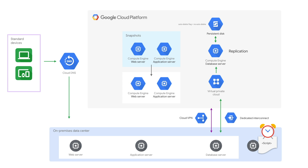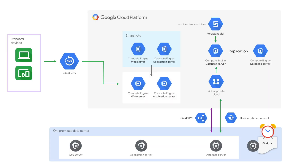Then configure Cloud DNS to point to the internet-facing web service on-premise. When a disaster hits, all MainStreetArt needs to do is to resize the database server instance to handle the production load. Use the web and application server snapshots to create new web and application server instances. Then test that it all works. Once tested, point the Cloud DNS to their web service on Google Cloud.